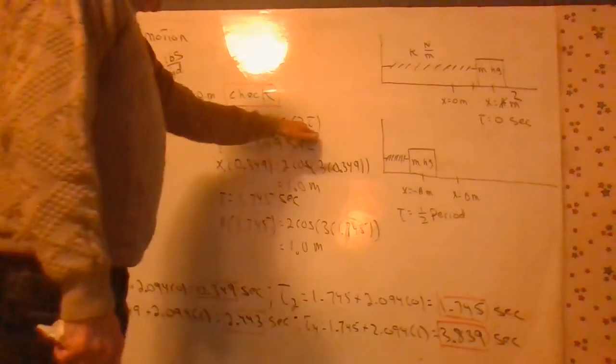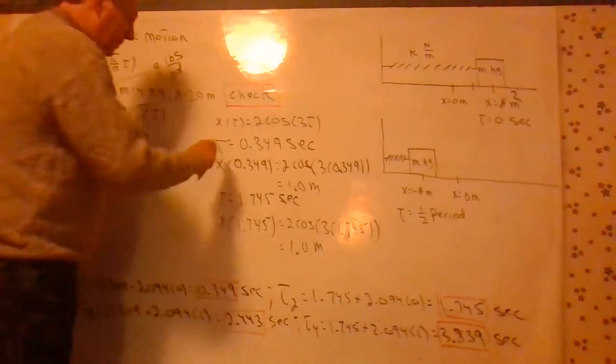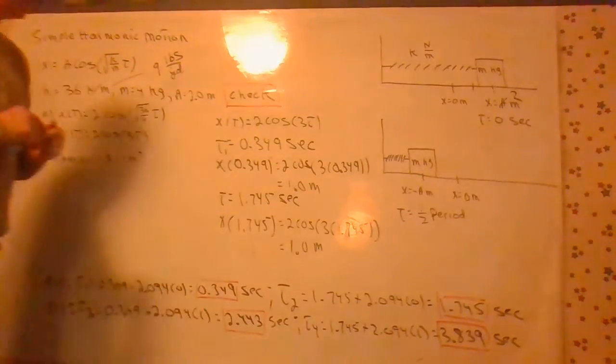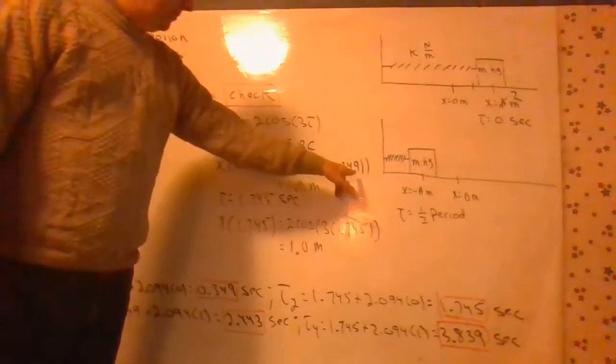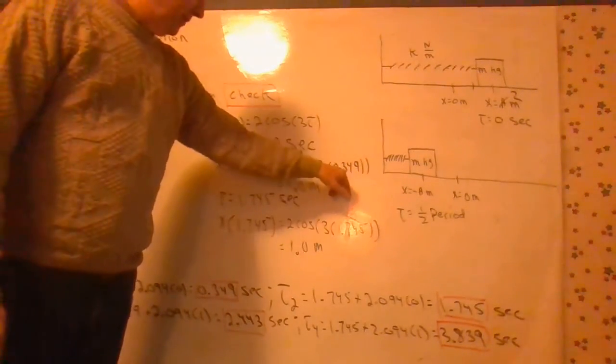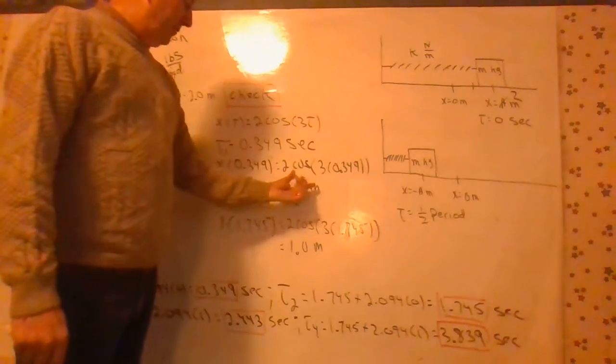Here's our function here with amplitude 2. Our first solution, which we call t1, 0.349 seconds, take that, substitute it into the cosine, 3 times that, take the cosine times 2, you end up getting about 1.0 meters.